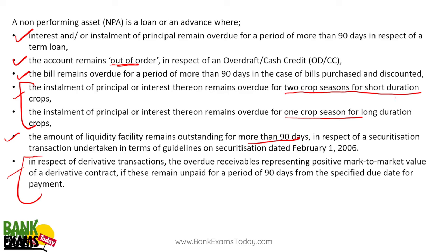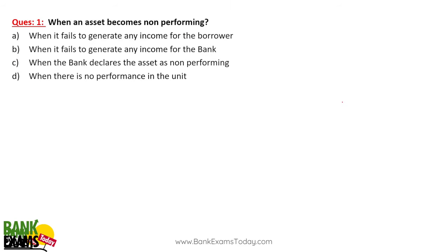This question was asked in the previous paper — specifically the two crop season rule. When an asset becomes non-performing — when an asset fails to generate any income to the lender or the bank — it becomes an NPA.